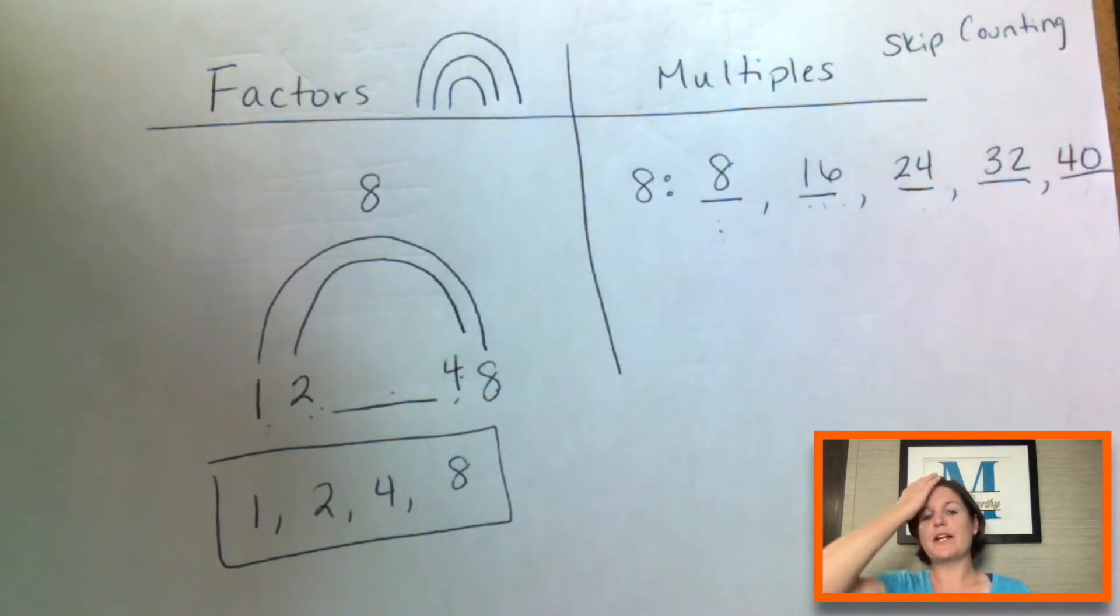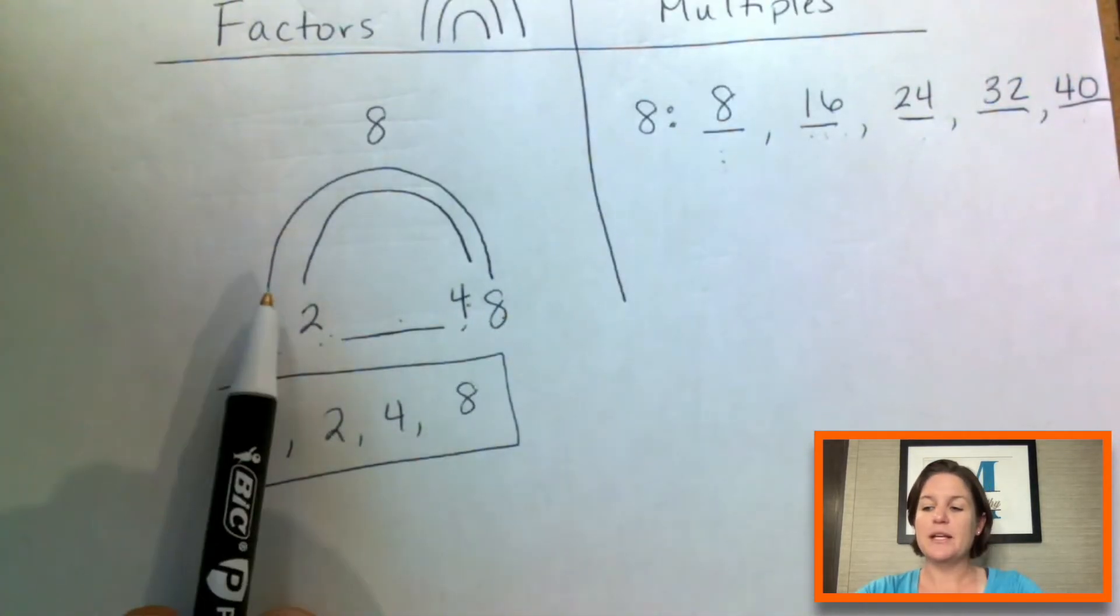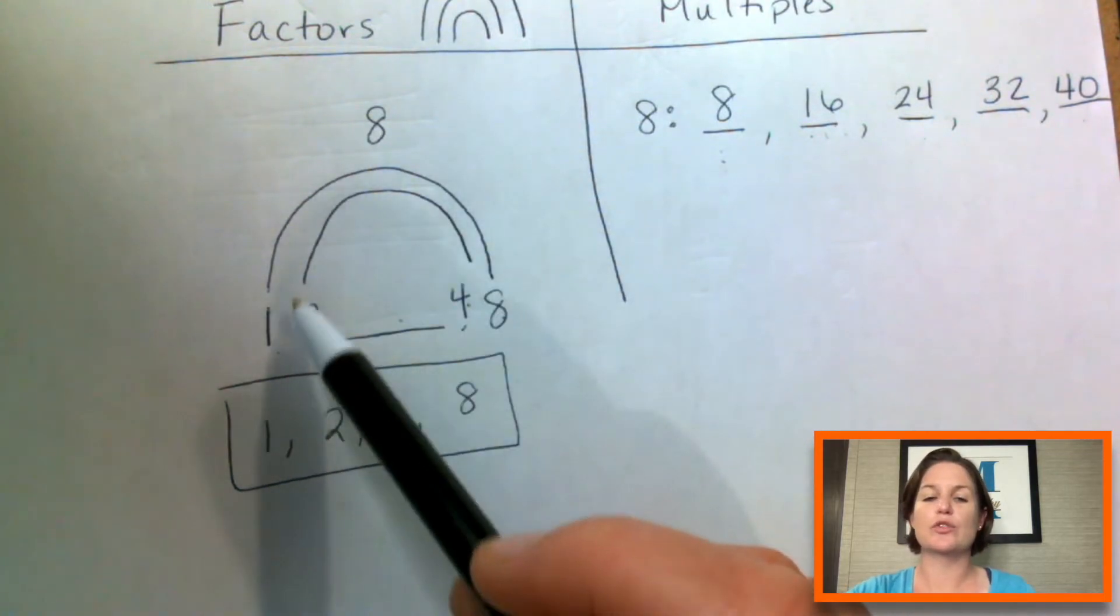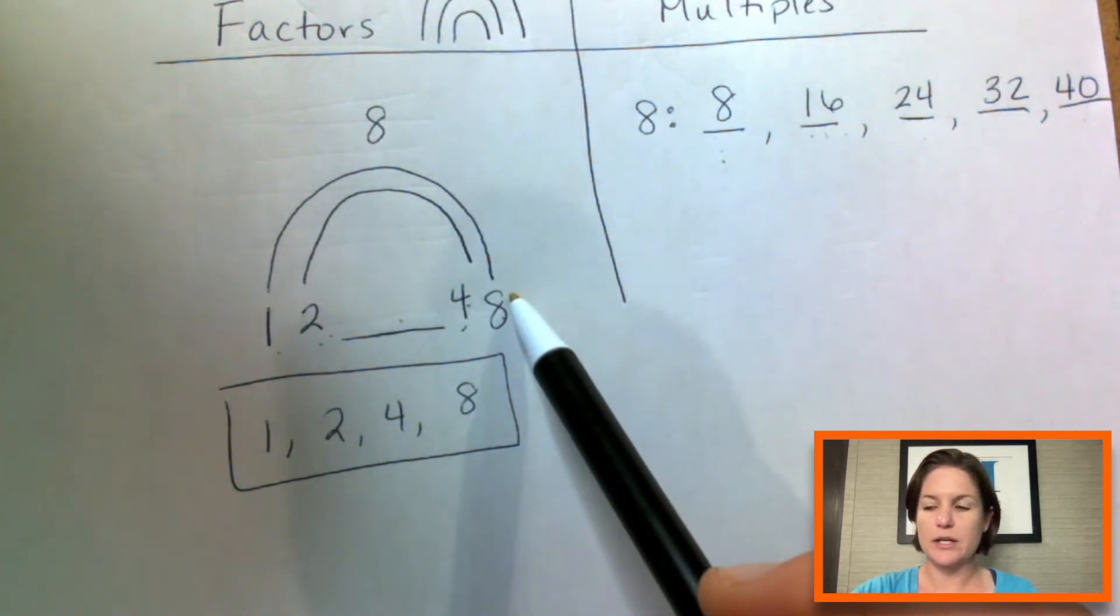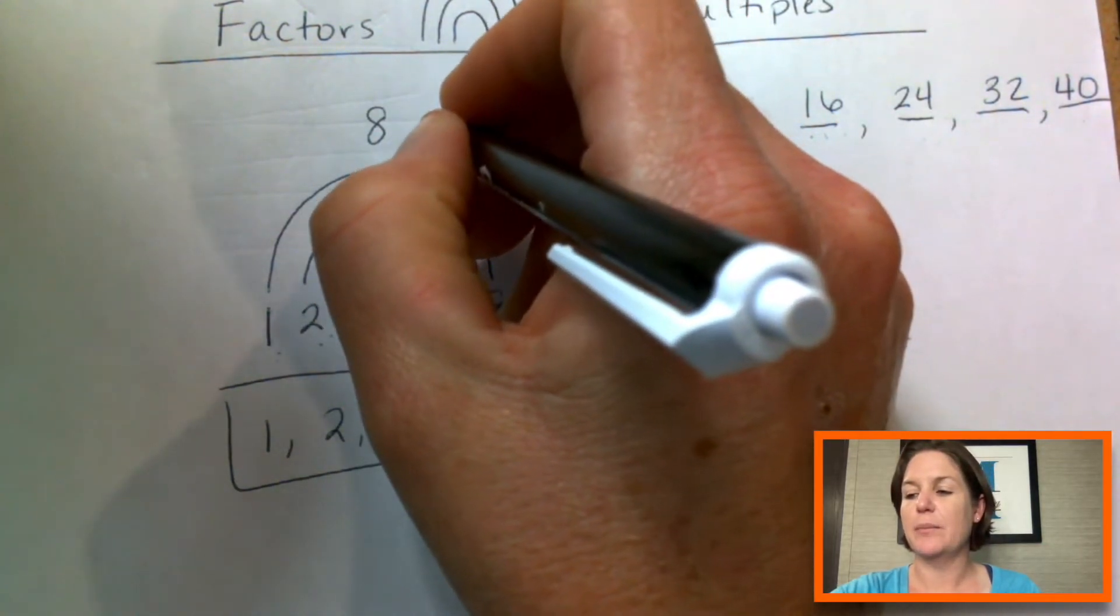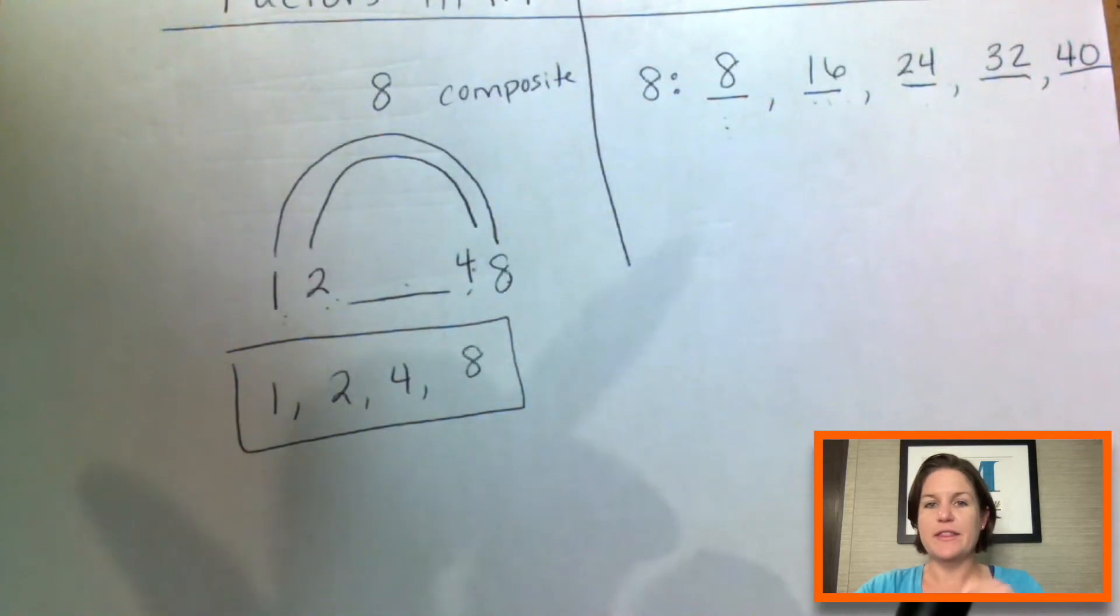All right. So that's the difference between factoring and skip counting, but I do want to go back to the factoring part real quick because we had more than one strand of the rainbow here that makes this eight composite. Eight is composite.